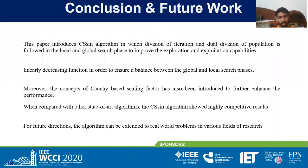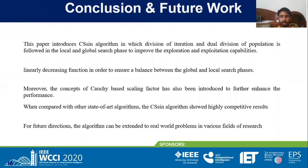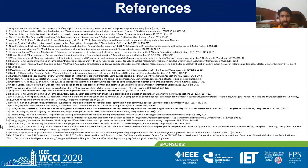In conclusion, the division of iterations and dual division of population in the local search phase improves exploration and exploitation. A linearly decreasing function ensures a balance between global and local search phases. The concept of a Cauchy-based scaling vector has also been introduced to enhance performance. The proposed CSN algorithm presents highly competitive results compared to other algorithms. For future directions, the algorithm can be expanded to real-world optimization problems across various fields of research.